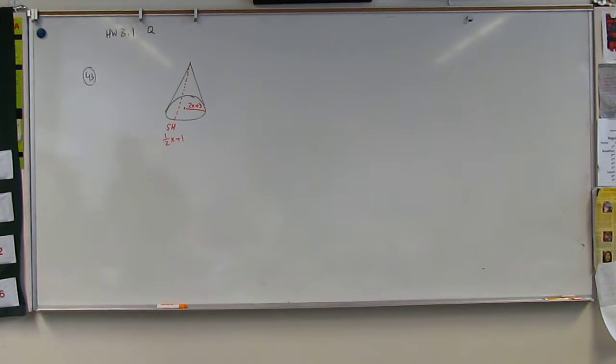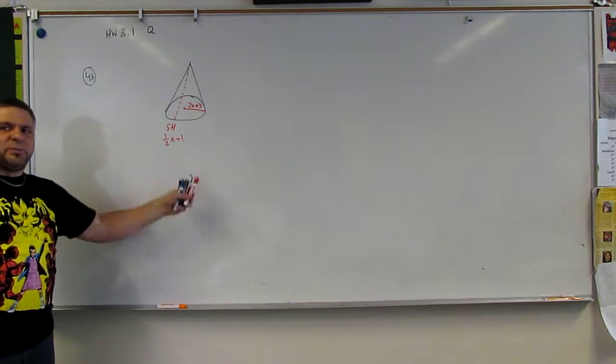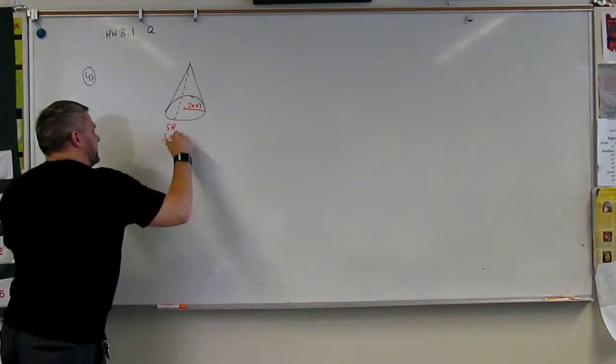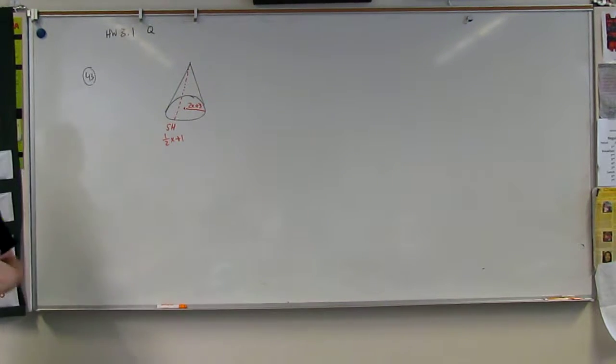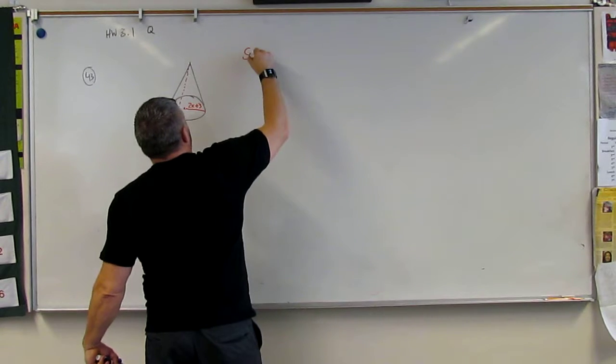So there's a slant height of 1 half x plus 1, and there is a radius of 2x plus 3. Now we have to understand what the surface area is equal to.